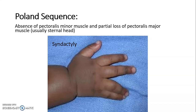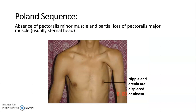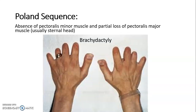In Poland sequence, there can also be brachydactyly, meaning the digits on the affected side are short and stubby. To summarize: Poland sequence involves absence of pectoralis minor and partial loss of pectoralis major; the nipple and areola are displaced or absent on the affected side; and the affected side may show syndactyly or brachydactyly.